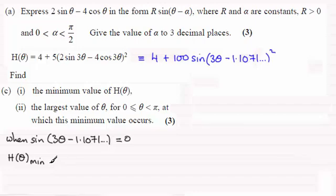This is when we're going to get our minimum value for H(θ). And what's it going to be? Well, it's just going to be 4, because obviously 100 times zero is just going to be zero there.